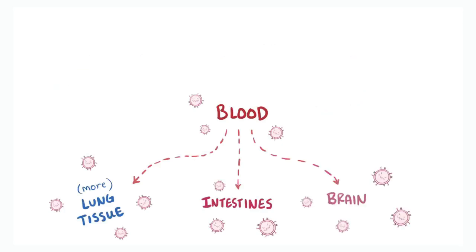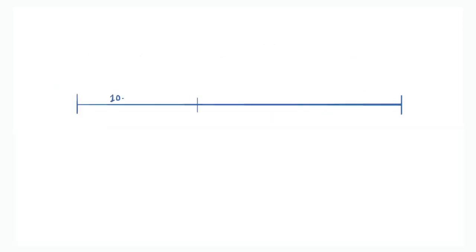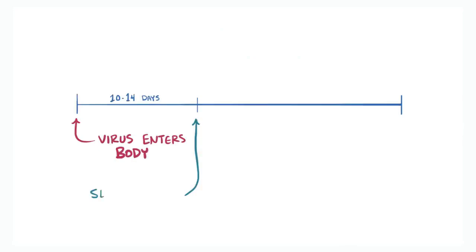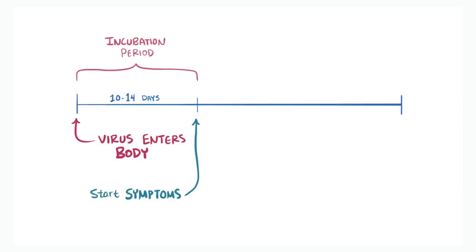It typically takes 10 to 14 days from the time that the virus enters the body to the start of symptoms — this is the incubation period. Once the symptoms start, we've entered the prodromal period, which typically lasts around three days.